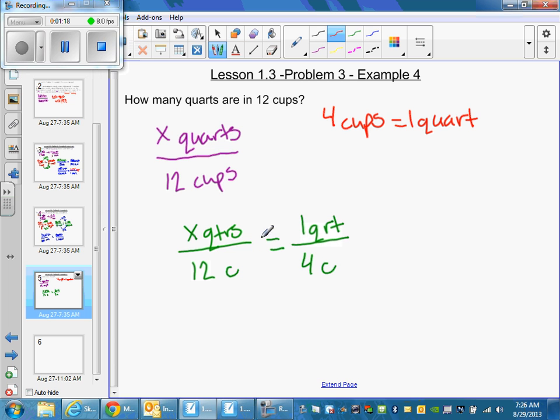So I'm going from 1 to X. From 4 to 12, 4 times 3 gives me 12. So times 3. 1 times 3.